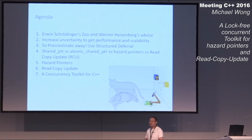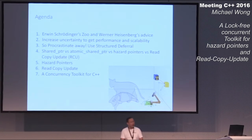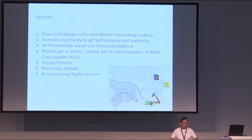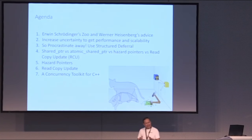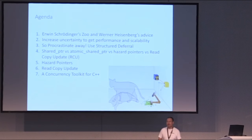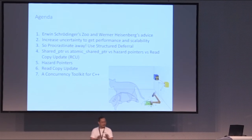I'm going to take a look at the differences between something you know very well, shared_ptr, how that works in a lock-free concurrency framework, and then look at something that is coming — although it didn't make C++17 because it's in the concurrency TS — called Atomic shared_ptr. What does that add to it?